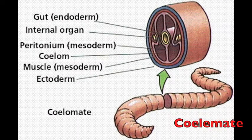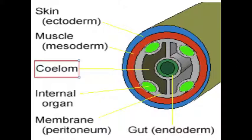An earthworm contains a coelom. A coelom is a fluid-filled cavity within the mesoderm. Having a coelom gives the animal certain advantages, like providing space for enlargement and development of internal organs, and it may act as a circulation of materials or a storage area for excess or waste material.